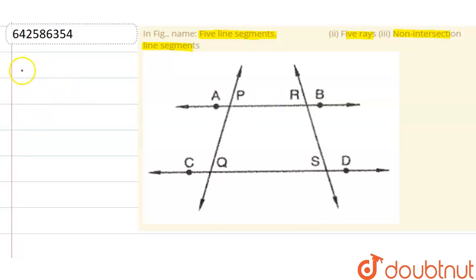So we have five line segments: AB, CD, PR, RS, and QS. Or I can say QP. There are many line segments. This is six line segments. It's asking about five line segments, so just take the first five line segments.